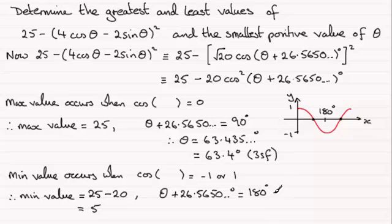So from here, it follows that if I take this angle away from 180 degrees, θ equals 153.435 degrees. And if I round this to three significant figures, it's just going to be 153 degrees.